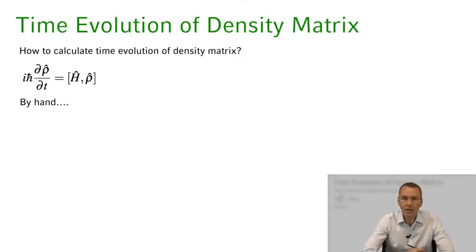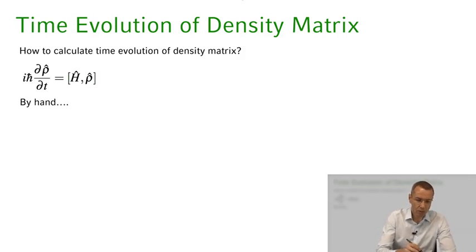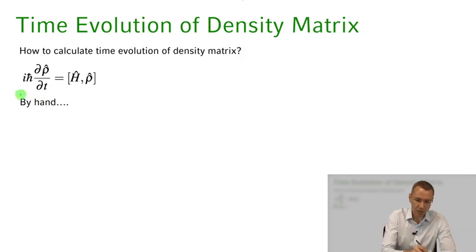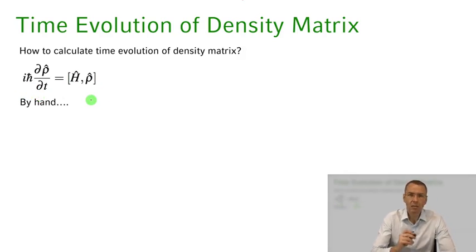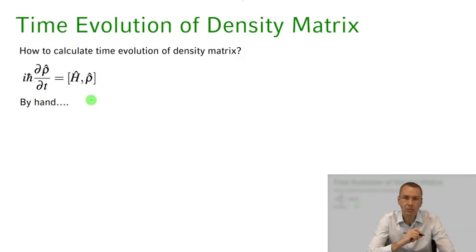One very elegant way of calculating the time evolution of the density operator would be to use the von Neumann equation, but let's take a more pedestrian approach and do this more by hand to get a little bit of the feeling for the time evolution of the system.